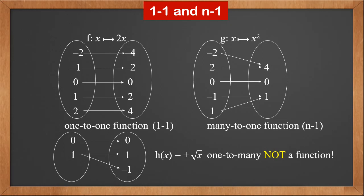Notice that a 1 to many mapping is not a function. For example, h(x) is plus minus root x. Zero is mapped to zero, but 1 is mapped to both 1 and minus 1. So one x is not mapped to exactly one y, but two y's. Therefore, h is not a function. Remember that a function can be only 1 to 1 or many to 1, because each x is mapped to exactly one y in a function.